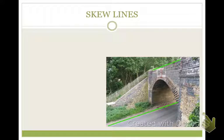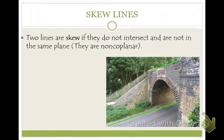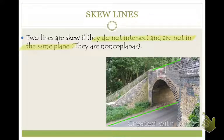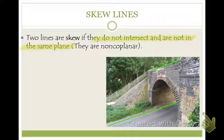We have one more type of line: skew lines. Something to remember is they have nothing in common — they'll never intersect and they're not on the same plane. The official definition: skew lines do not intersect and are not coplanar. Think of a picture with a green line representing the road and another green line representing the top of a wall — they would never touch if continued infinitely in both directions. Those are skew.